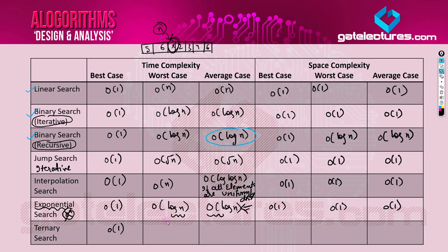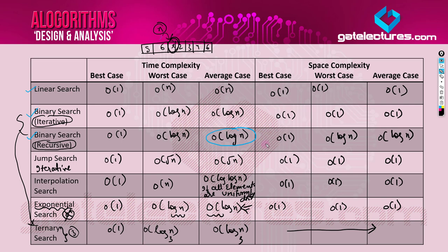Ternary search is essentially an implementation of binary search, except instead of dividing the array into two parts, we divide it into three parts. We could also have quinary search or divide into even more parts, but there is no benefit — binary search is better than ternary search. Ternary search also takes O(log n) time but with base 3, and we can prove binary search is better. Binary search falls under the category of decrease and conquer, and we will discuss the difference between divide and conquer and decrease and conquer techniques.